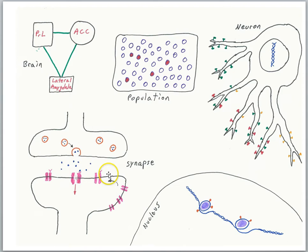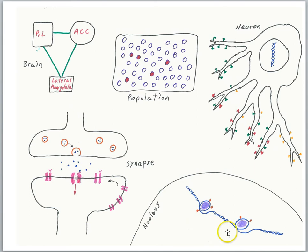We know that LTP — for example, the late stages of LTP — seem to require protein synthesis and gene expression. So we think genes will be involved in giving brains the capacity to change, to learn, and make memories.